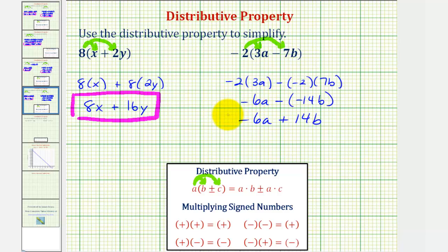After doing quite a few of these, we probably won't show this much work. We could just think of this as negative 2 times 3a for negative 6a. And then for the next product, we can think of this as negative 2 times negative 7b, which would be positive 14b, and therefore we can just write plus 14b.